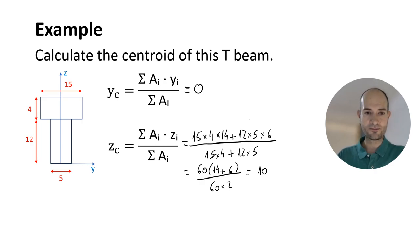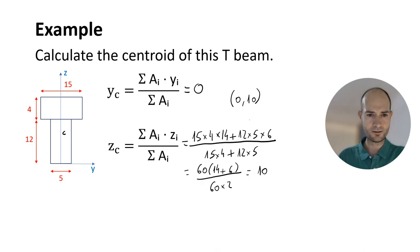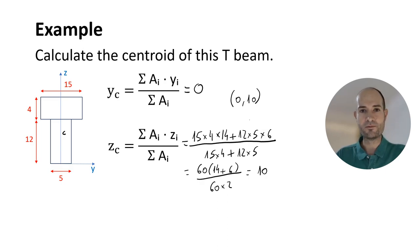So in this case we will have the centroid at (0, 10), which will be roughly here. That will be the centroid. To obtain a centroid, we multiply the different areas of the shape times the distance to the origin we are considering.